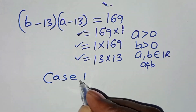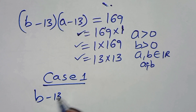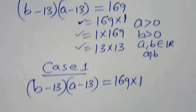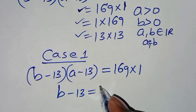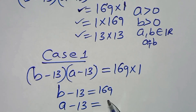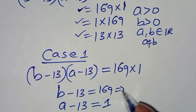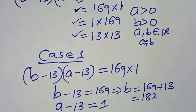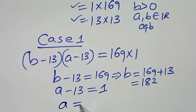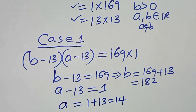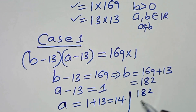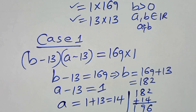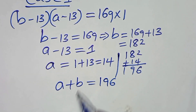Case 1: (B minus 13)(A minus 13) equals 169 times 1. So B minus 13 equals 169, giving B equals 182; and A minus 13 equals 1, giving A equals 14. Therefore A plus B equals 14 plus 182, which equals 196. This is the solution to Case 1.